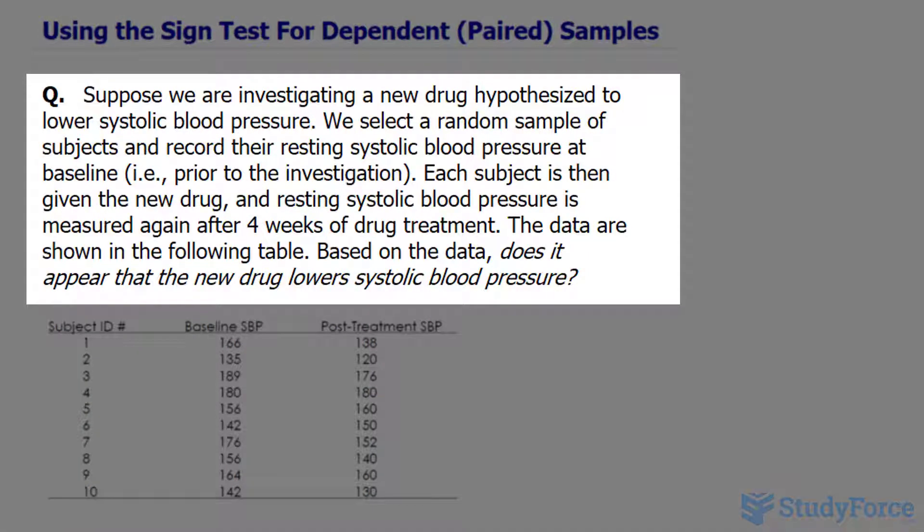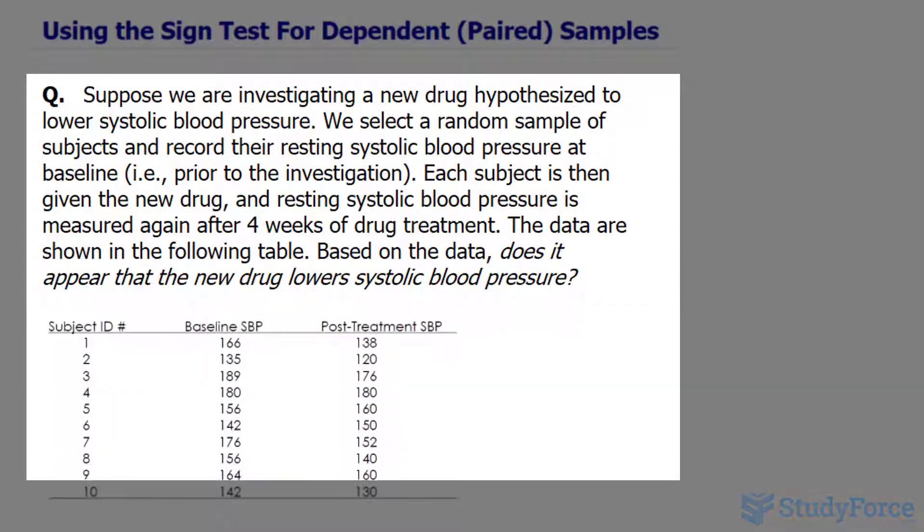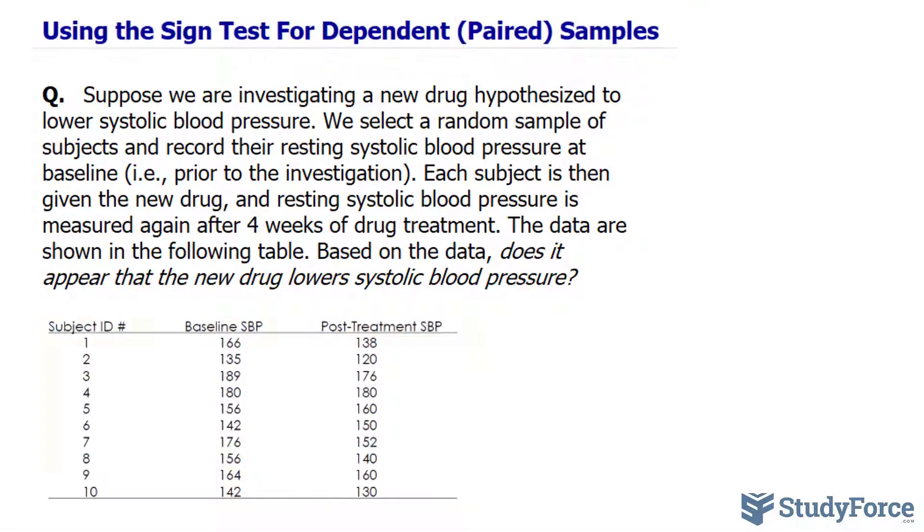The question reads: suppose we are investigating a new drug hypothesized to lower systolic blood pressure. We select a random sample of subjects and record their resting systolic blood pressure at baseline. Each subject is then given the new drug and resting systolic blood pressure is measured again after four weeks of drug treatment. The data is shown in the following table, and based on the data, does it appear that the new drug lowers systolic blood pressure?